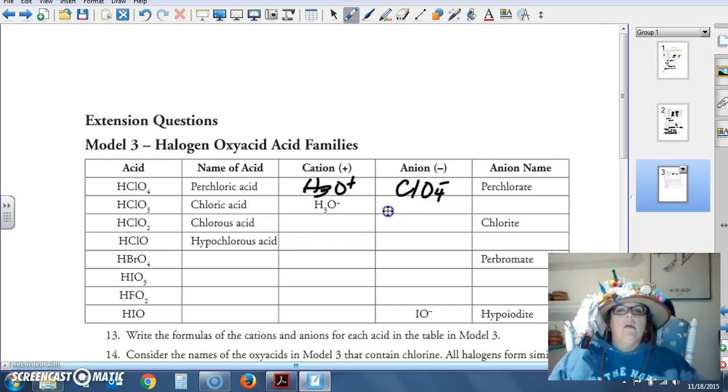Perchloric acid will separate into the hydronium ion, and ClO4 was perchlorate. Chloric, the hydronium ion, ClO3, which is chlorate.